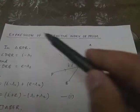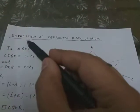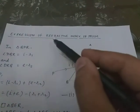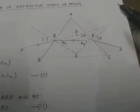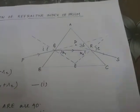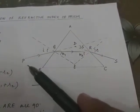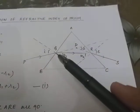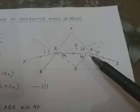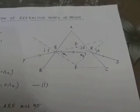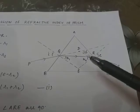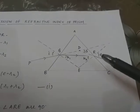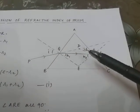Let's talk about our next topic: the expression of refractive index of a prism. In the diagram, ABC is the triangular section of the prism. PQ is the incident ray, QR is the intermediate ray, and RS is the emergent ray. Here, i is the angle of incidence, e is the angle of emergence, δ is the angle of deviation, and A is the angle of prism.